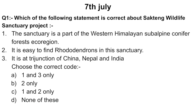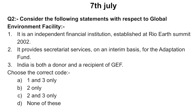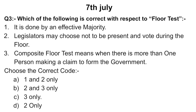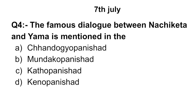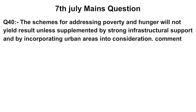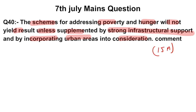Please pause the video and try to answer the questions. Question 1 is with respect to the Sarting Wildlife Sanctuary — identify the correct code. Question 2 is on the Global Environment Facility — study the statements and identify the correct code. Question 3 is on the floor test from polity — identify the right option. Question 4 is from history — where is the dialogue between Nachiketa and Yama mentioned? The main question for today: 'Schemes for poverty and hunger will not yield results unless supplemented by strong infrastructural support and by incorporating urban areas into consideration.' Attempt this 15-marker question.